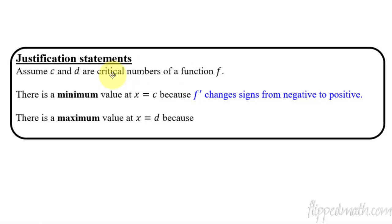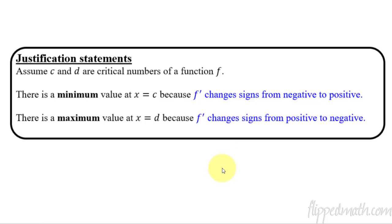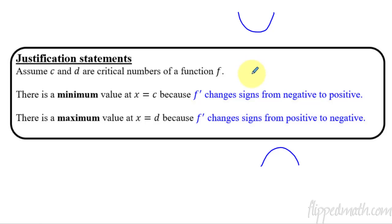That's how you justify that you have a minimum — it changes signs from negative to positive. This is only if you already know that it's a critical number. And then there is a maximum value at x equals d because f prime changes signs from positive to negative. Going down and then going up forces you to have a minimum. Draw it on your paper real quick to remind yourself what the slope is doing.